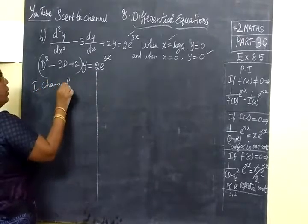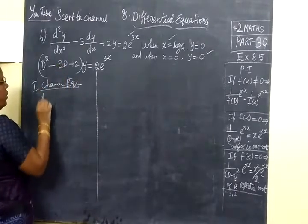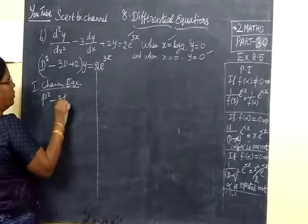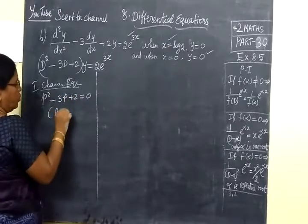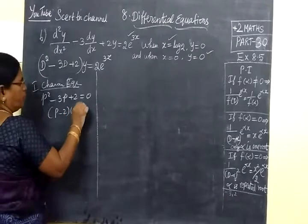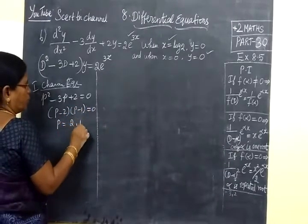The characteristic equation: D squared minus 3D plus 2 = 0. So (D minus 2)(D minus 1) = 0. So D = 2, 1. The values are distinct, they have distinct roots.